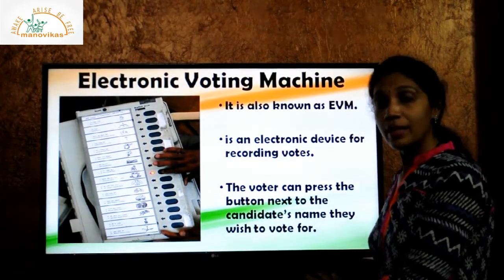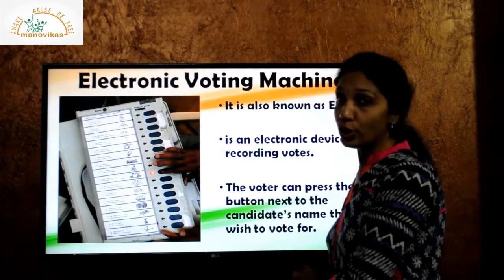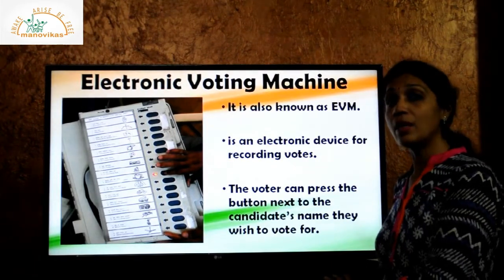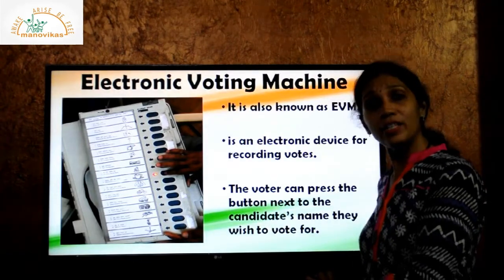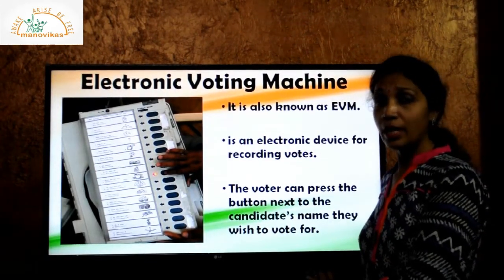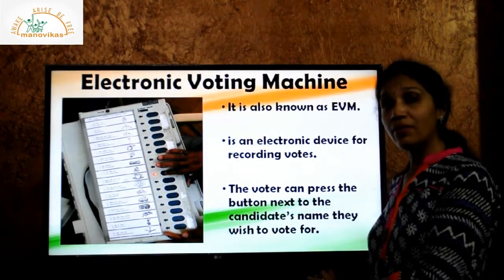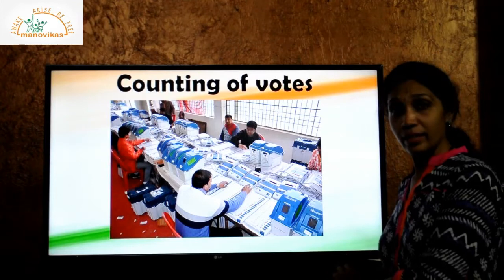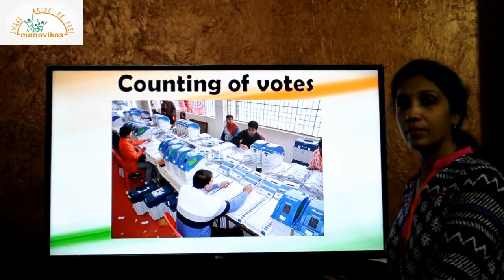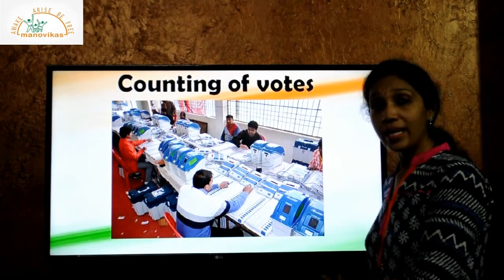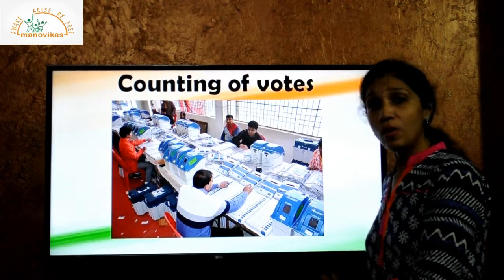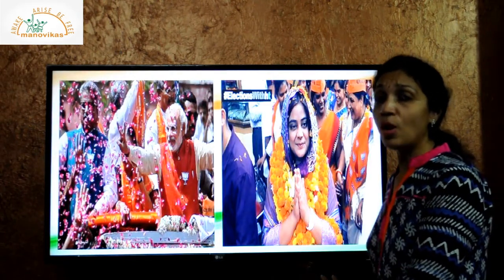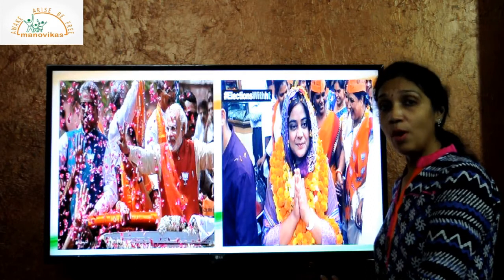This machine brings the election results in a very short time. The government does not control the Election Commission — that means the government cannot play any role during the process of election. The Election Commission collects all the EVMs after the votes have been cast. The votes are counted and the results are declared. The candidate who gets the maximum number of votes in a constituency is elected. The party with the maximum number of winning candidates forms the new government.